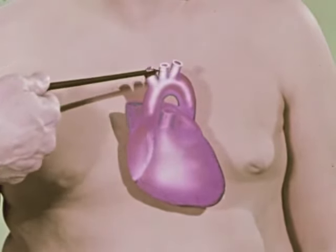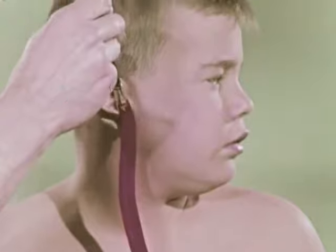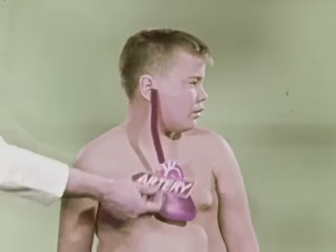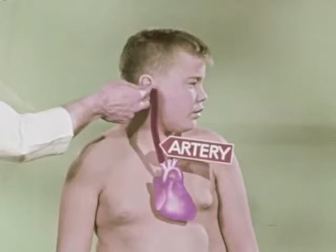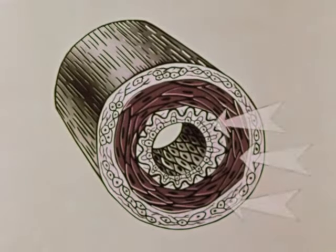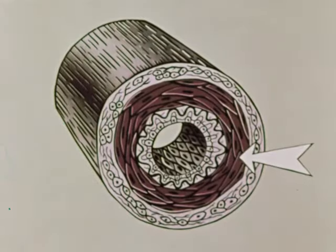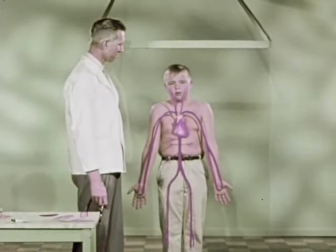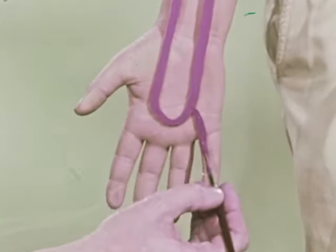Let's follow this large blood vessel out of the heart. We'll draw the path of this blood vessel up through the neck to the head. It is called an artery. Arteries carry blood away from the heart. Every artery is tube-shaped and made up of three layers. This layer of muscle in the artery helps push blood through it. We can see that all the main arteries start at the heart and carry blood to every part of the body, even to each toe and finger.